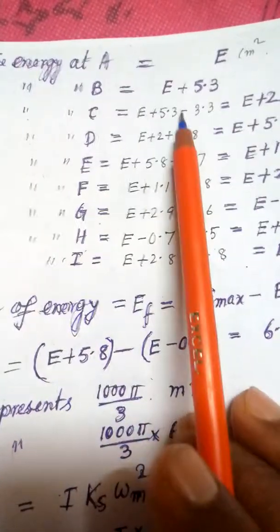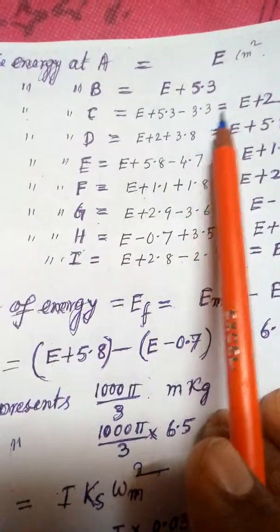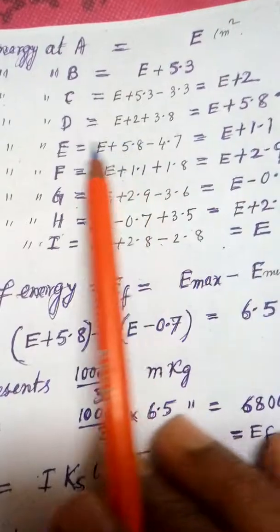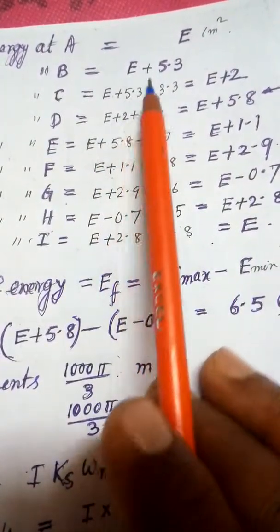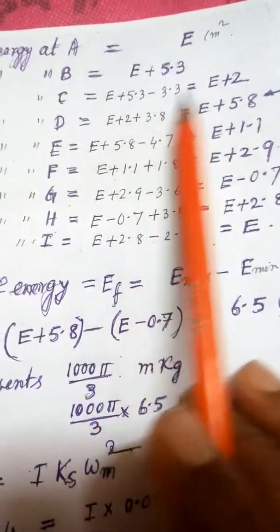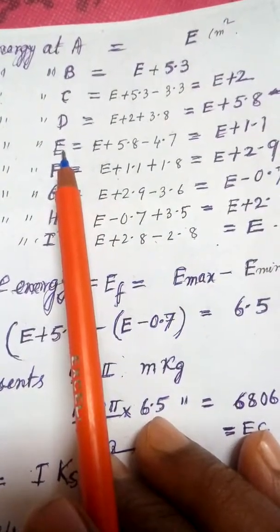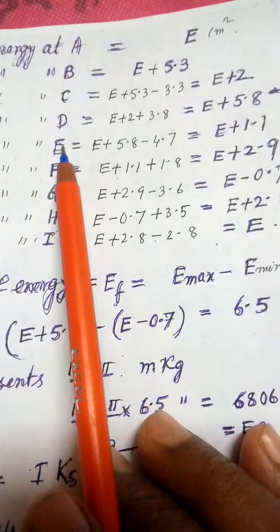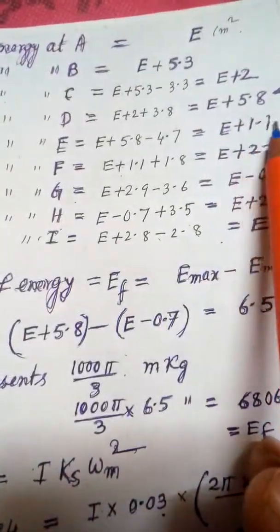D, similarly go on adding. E plus 2 plus the next area, so E plus 5.8. E at the E point, actually this is the energy at this point, so E plus 1.1. F, E plus 2.9.